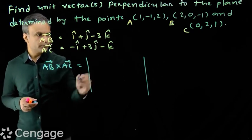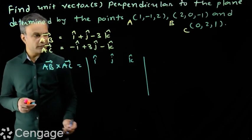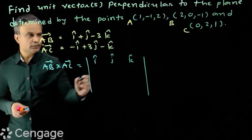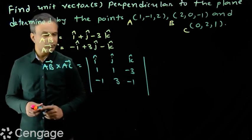We write vectors i, j, k in the first row. Then we write the elements of vectors AB and AC: 1, 1, -3 and -1, 3, -1.